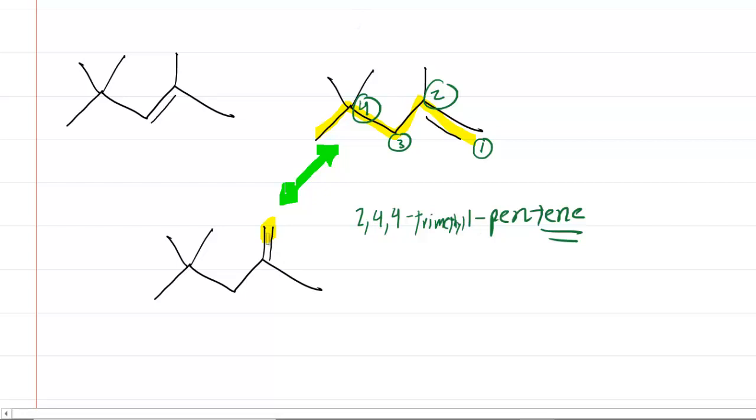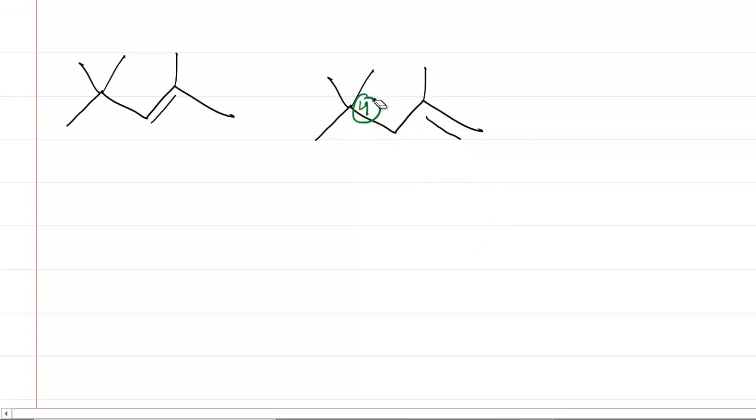Now look at this molecule here. If you highlight the longest chain of carbons that includes the double bond, you're going to get the same thing. You're going to get a double bond that begins at carbon one. You're going to get a methyl group right there at carbon two. And then you're going to get a pair of methyl groups at carbon four. So this would actually have the same name as this molecule. So that means that these two are identical. We don't have to consider both of them. So we can erase this as a possibility because it is redundant.